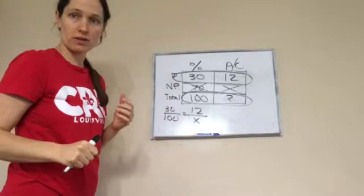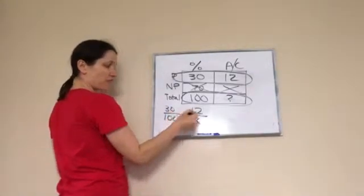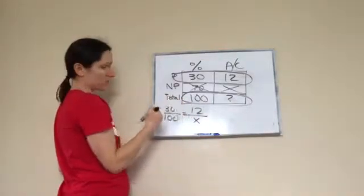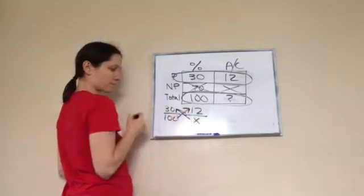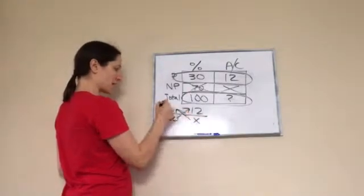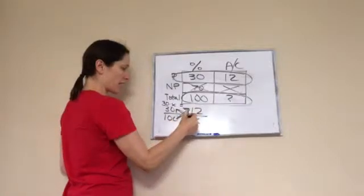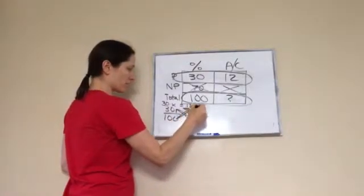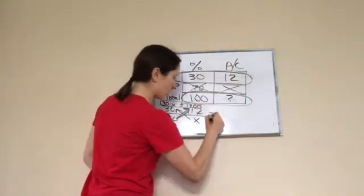Remember what we do? Sometimes we can find a function, but this one we can't, so we're going to have to cross multiply. 30 times X equals 100 times 12, which is 1200.